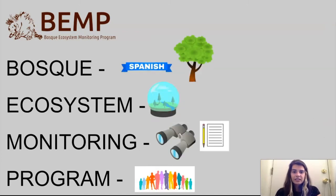I have some images here of what each word means. The Bosque is a Spanish word for forest. It's not just any forest, it is a forest that is next to a river, and in this case it is our Rio Grande River. Ecosystems consist of living things and non-living things that live together and rely on each other to survive.